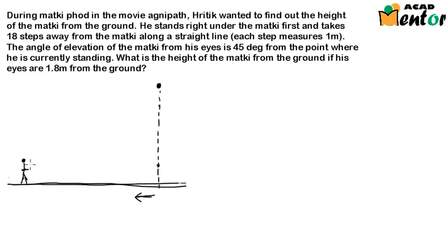So from here the angle of elevation was 45 degrees. So let me just draw the line of sight. This is the line of sight. What would be the horizontal level? This would be the horizontal level. The angle of elevation is given as 45 degrees.